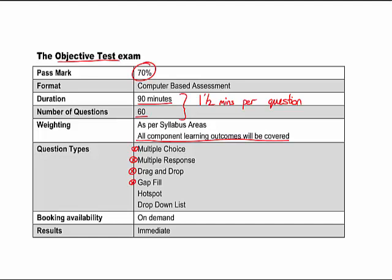Fourth, gap fill — normally for numeric questions where you key in the correct answer. Fifth, hotspot — very useful in E1 where you click on the correct part of a graph or model. For example, you may get a picture of a model and be asked to identify one part of it, such as on Mintzberg's organisational form, which is the strategic apex, and you click on the picture. Finally, the drop-down list — similar to multiple choice but instead of clicking A, B, C, D, you click on a menu that drops down and gives you a list to choose from. These objective test questions are available on demand and you get your results immediately.